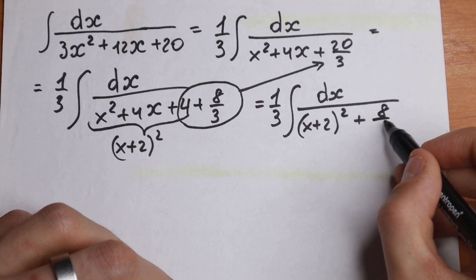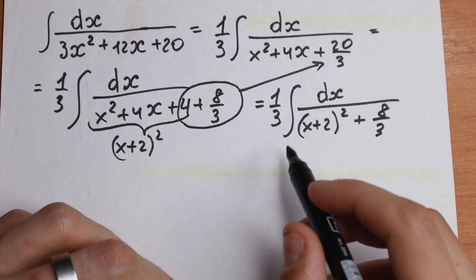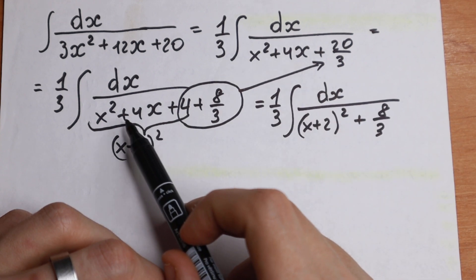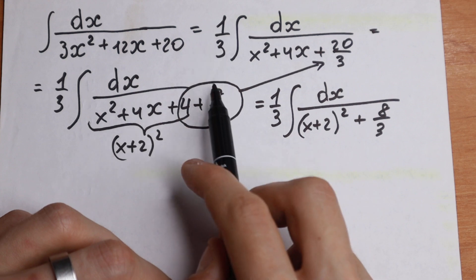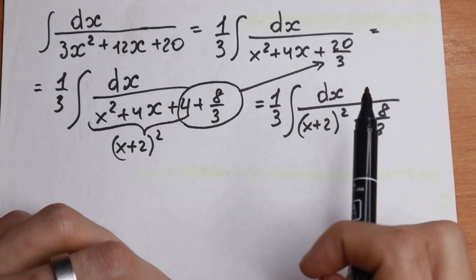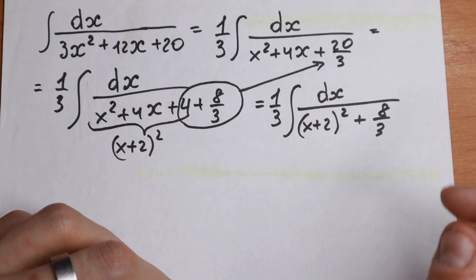So now we have 1 third times the integral of dx over the quantity x plus 2 squared, plus the constant 8 thirds. I hope you understand this step — we separated the expression and identified our perfect square formula, then factored out the 1 third.